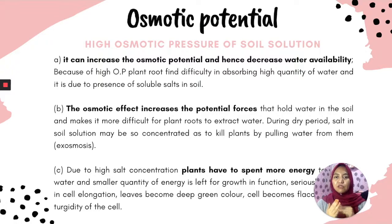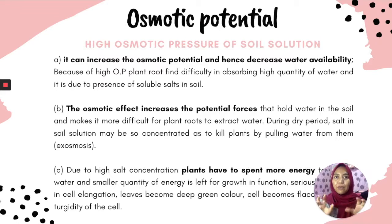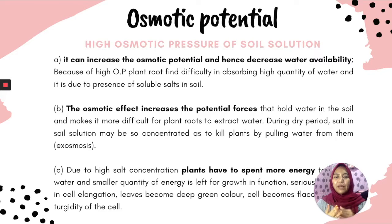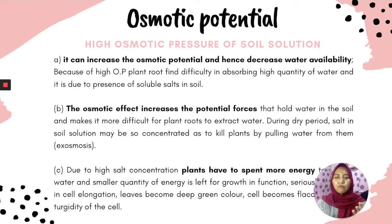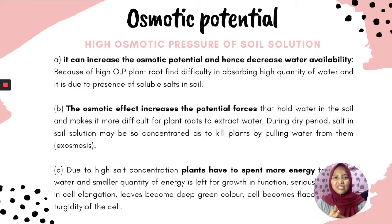The increased osmotic potential causes the soil to hold water, making it difficult for plants to extract it — especially during dry periods when there is a lack of water. Salt in the soil solution may become concentrated, drawing water from plants through osmosis. Due to high salt concentrations, the plant has to spend more energy, leaving only a small quantity for growth and other functions — such that leaves become deep green or cells become plasmolyzed.